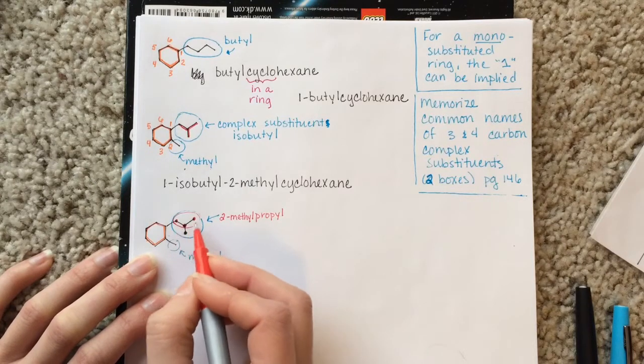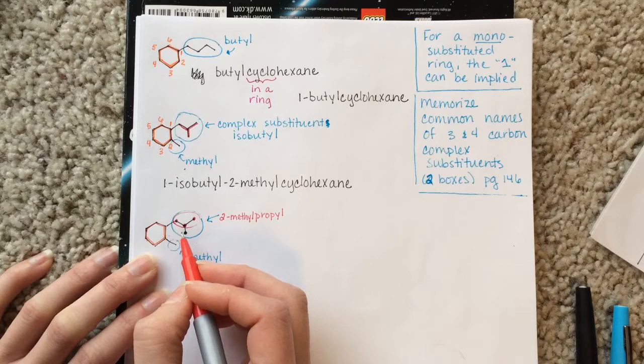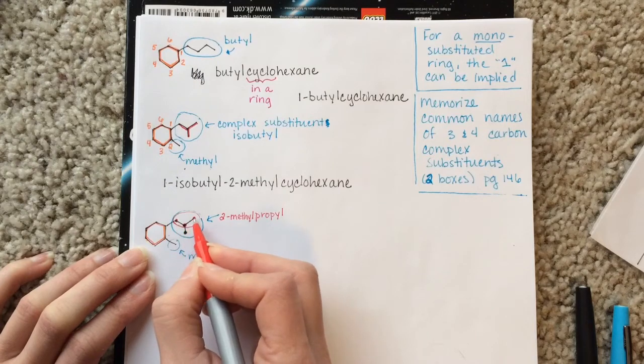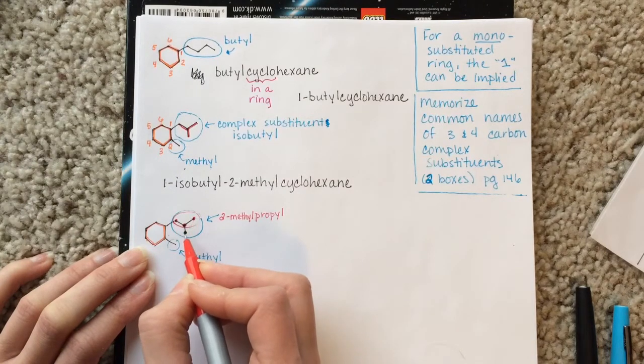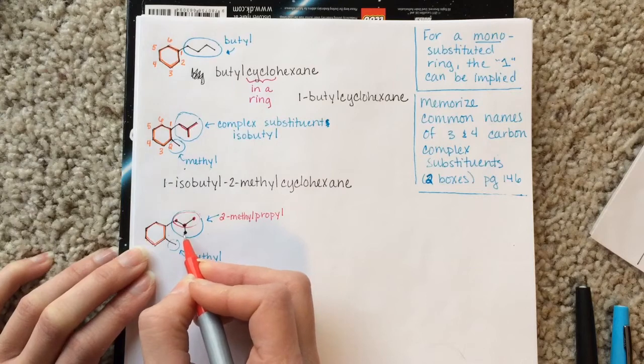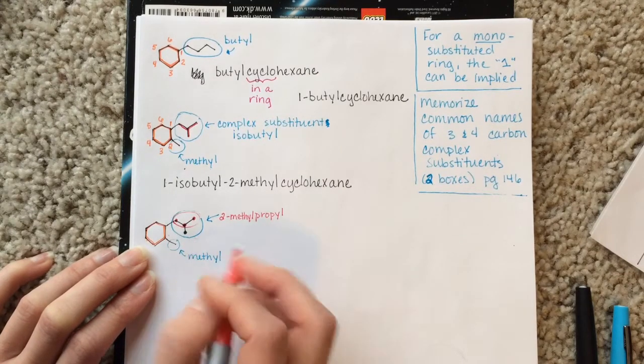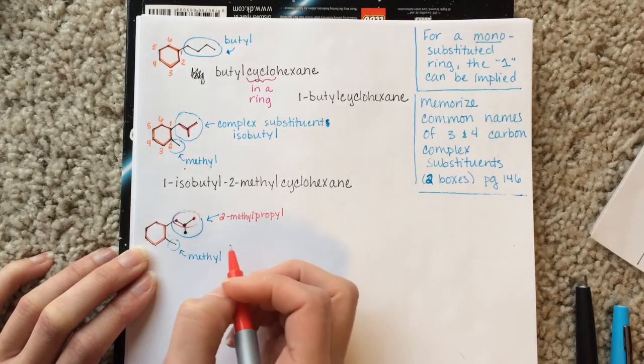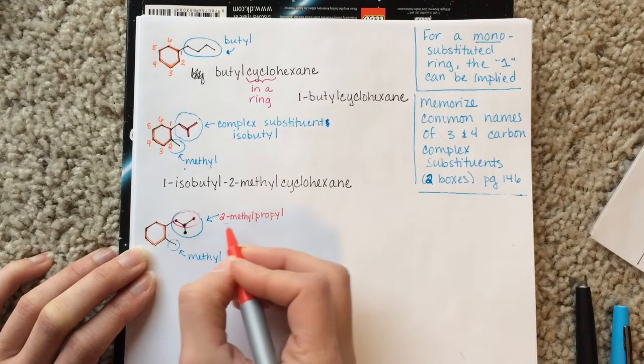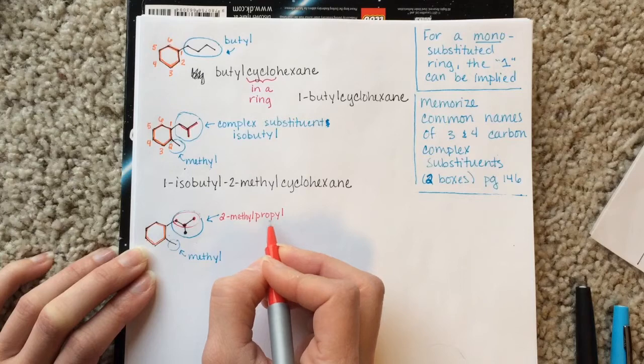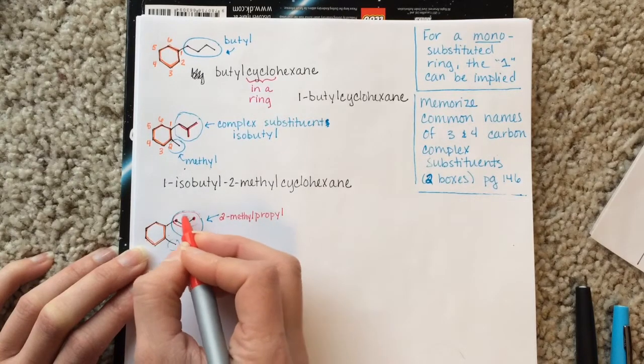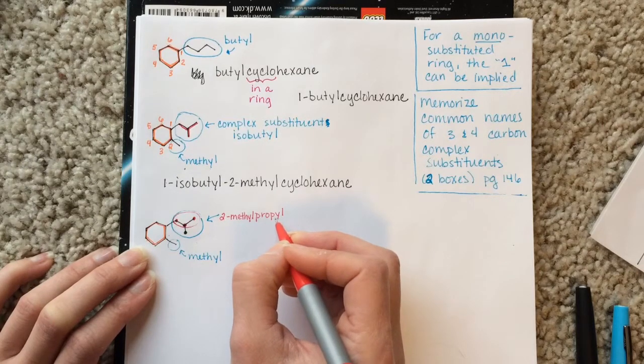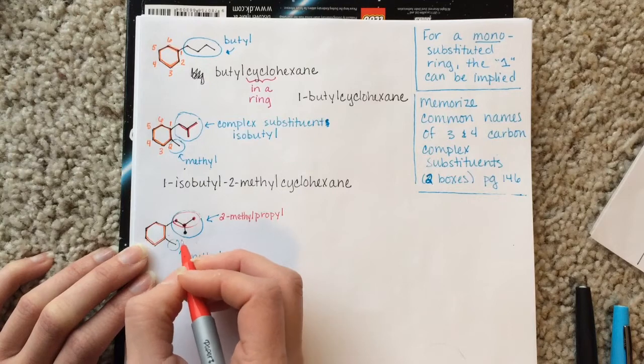When you are naming a complex substituent using the IUPAC method, you kind of treat it like it's its own molecule. You find its longest carbon chain. You find its substituent. You number and locate its substituent. And there you go. There are two ways that we name complex substituents differently than we would name just a regular alkane molecule. Number one, this is named 2-methylpropyl, not 2-methylpropane. Because this is still a substituent, it still gets the yl ending, just like all of our substituents do.